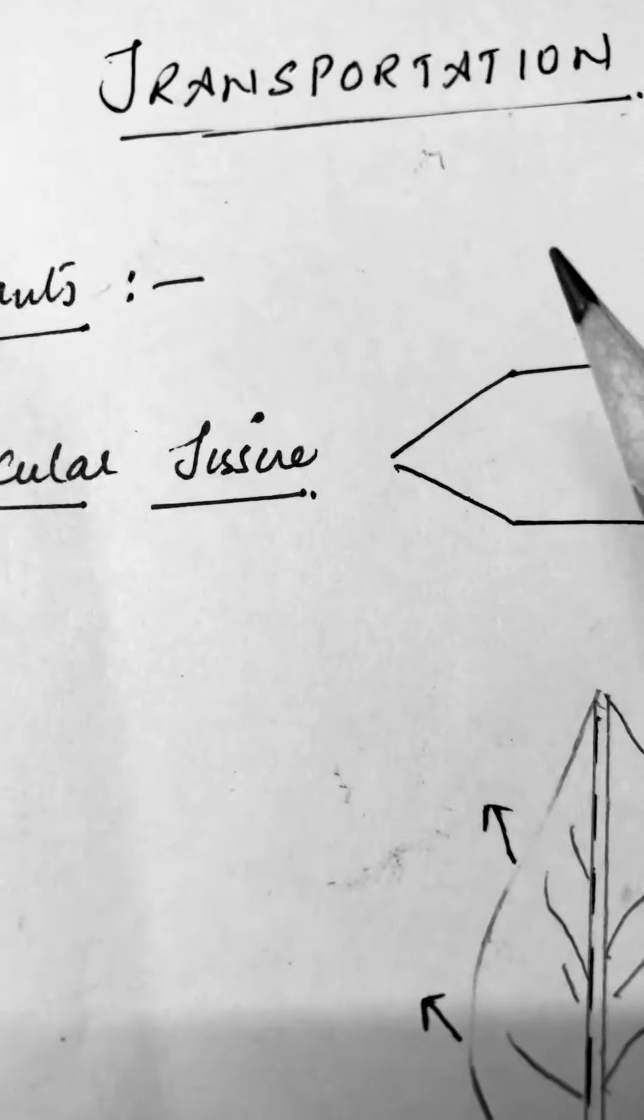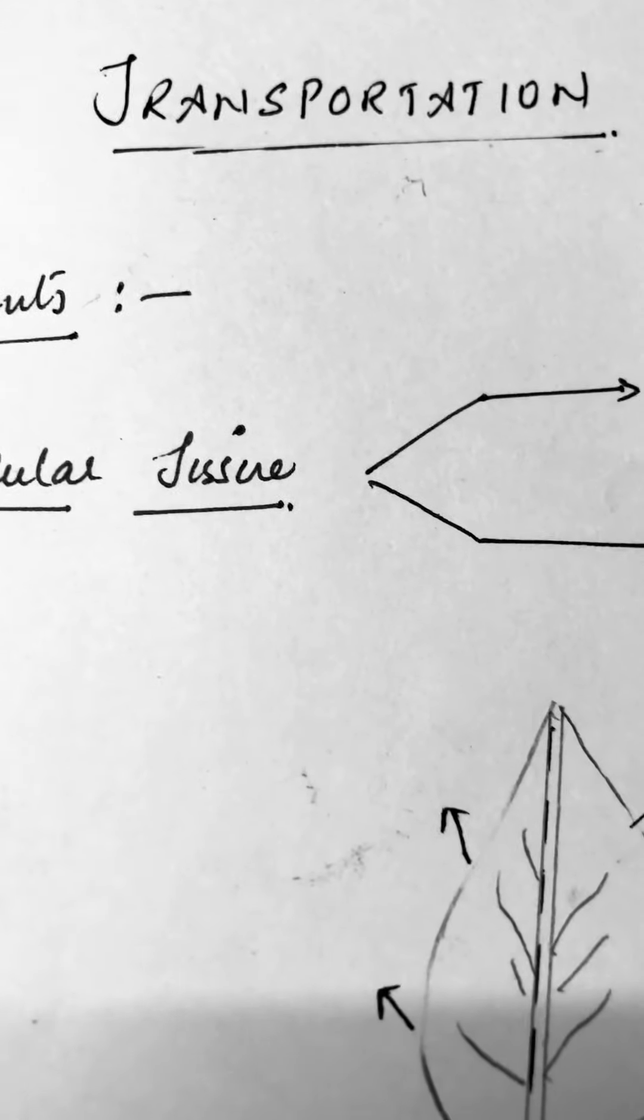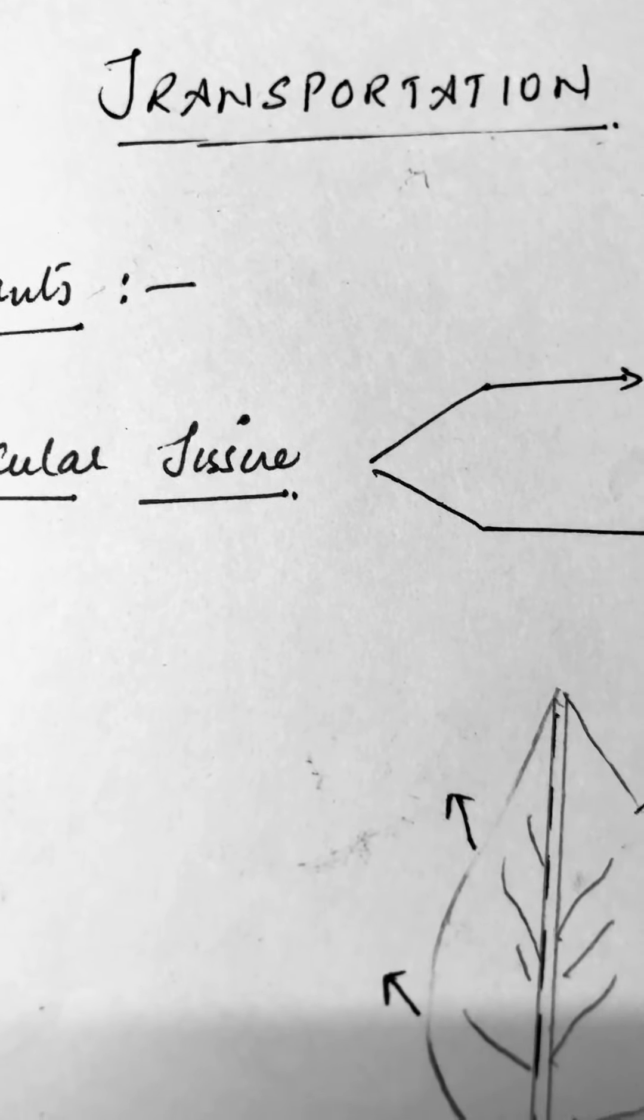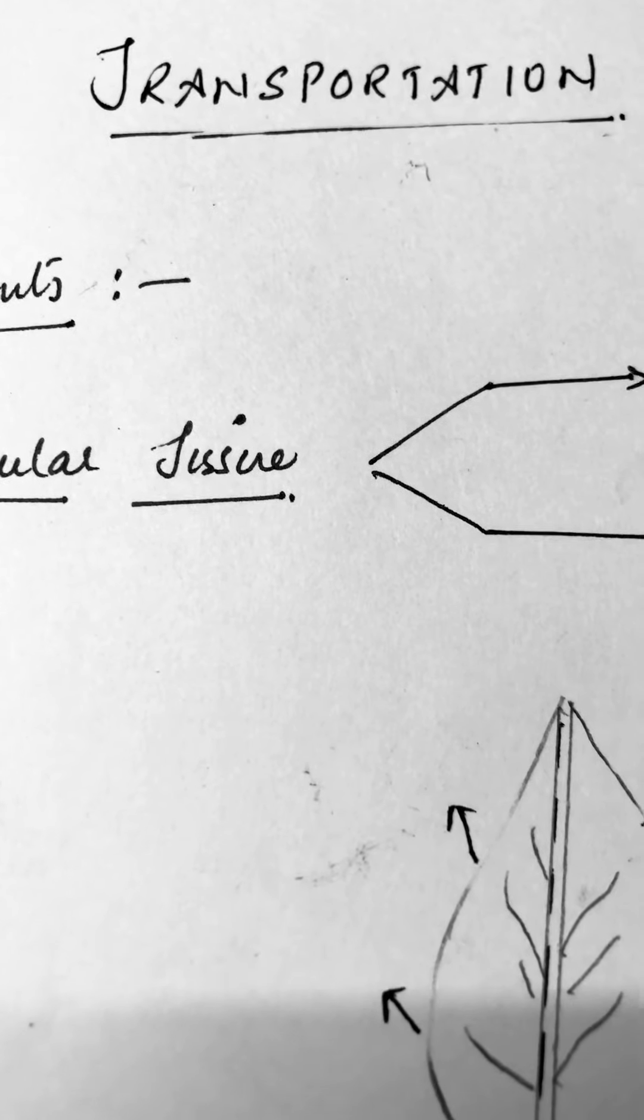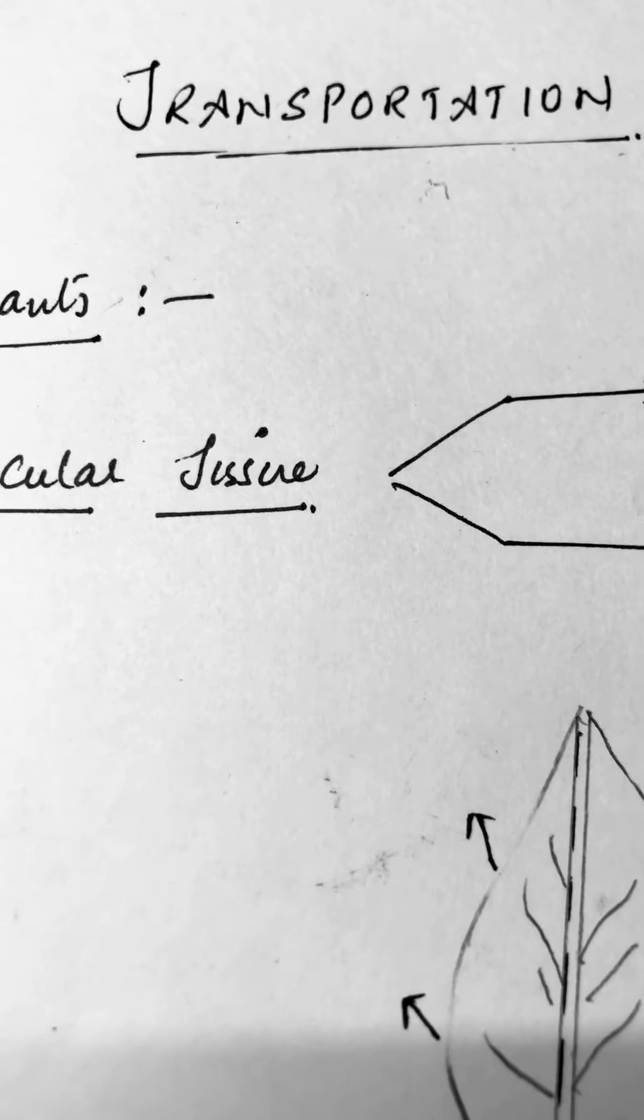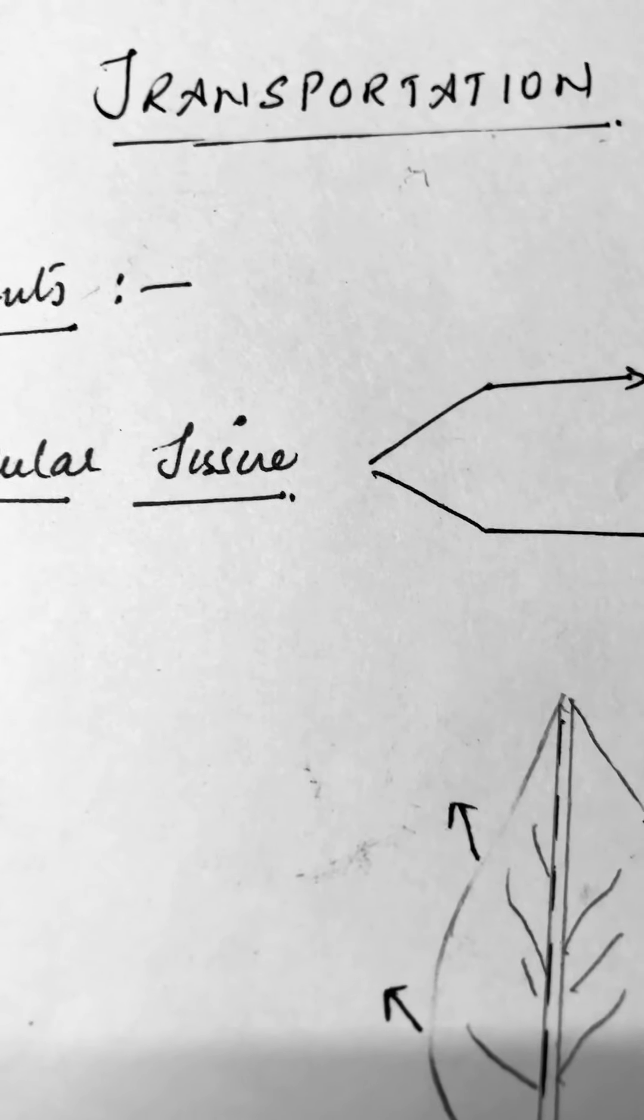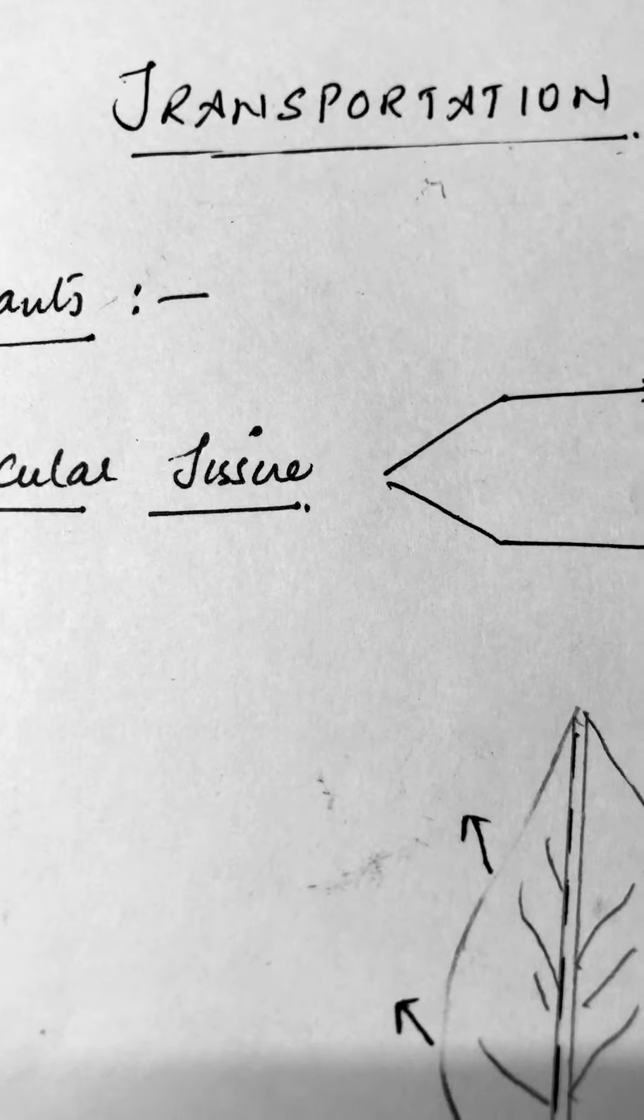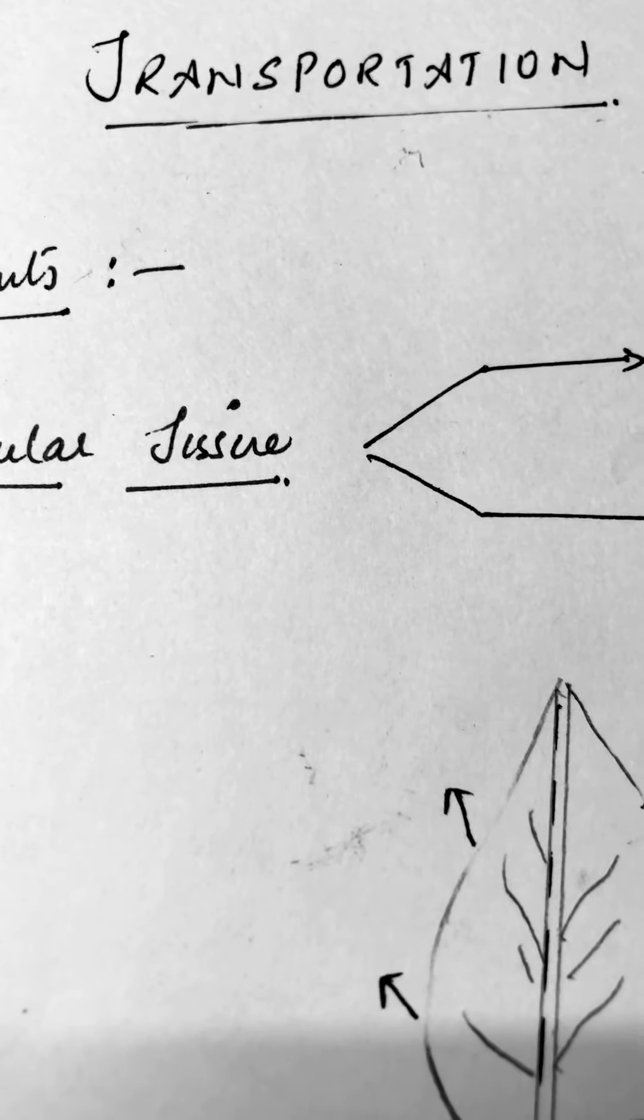When you talk about plants, we need to first know what exactly do we need to transport. In plants, majorly we have to transport two things. One is water from the roots to all parts of the plants, especially to the leaves because water is one of the raw materials for photosynthesis. And leaves contain stomata through which water transpires and helps in bringing rainfall to maintain the water cycle also.